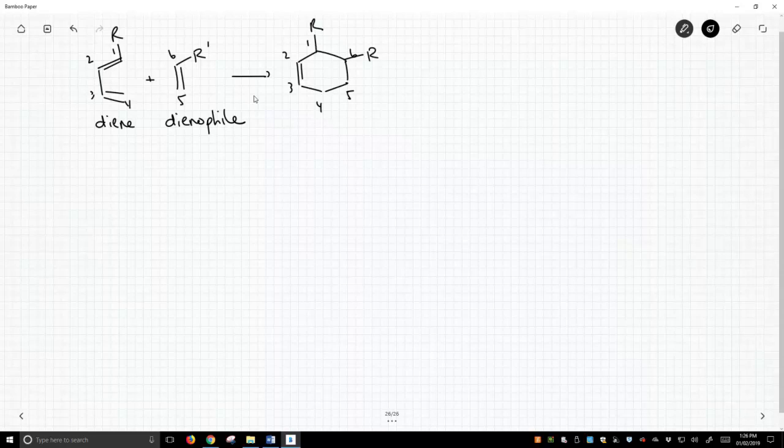And this is one possibility that the R and R prime groups would end up exactly as shown. But there's another possibility, and that is that our dienophile could flip upside down and instead react like this so that the R prime ends up at what we would call the number five carbon instead. So which happens? This is a question of regiochemistry.